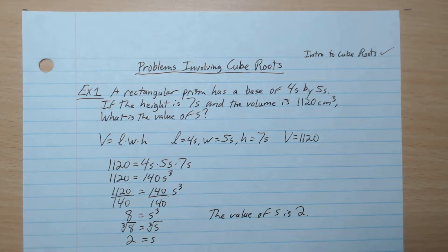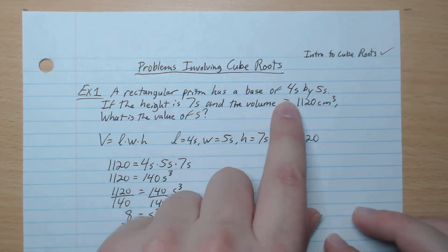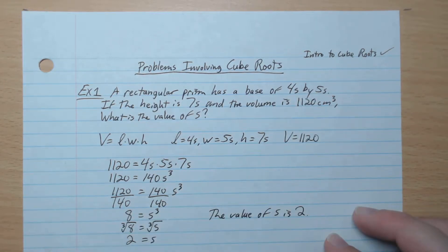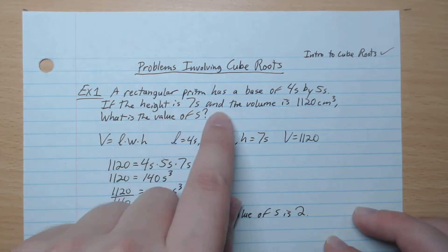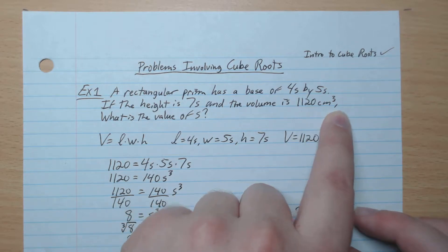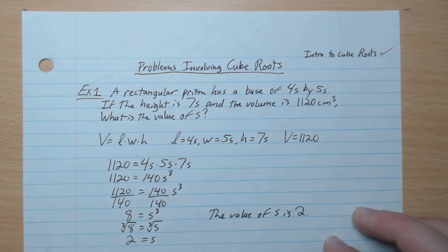Example 1. A rectangular prism has a base of 4s by 5s. If the height is 7s and the volume is 1120 cm³, what is the value of s?